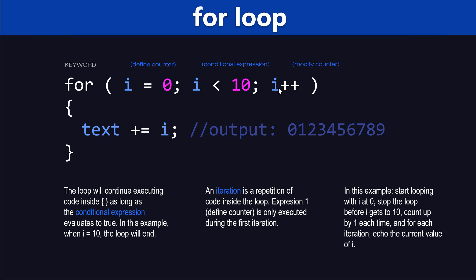So that's how the loop knows to keep going. It starts out with zero, then it increases i by one, executes whatever value of i is, and then continues until the conditional expression is matched. The iteration means a repetition of the code inside the loop — whatever code is inside the curly brackets is executed, and that is called an iteration.